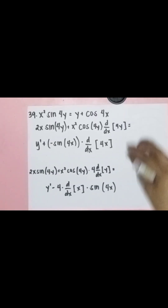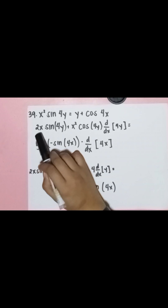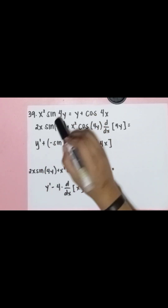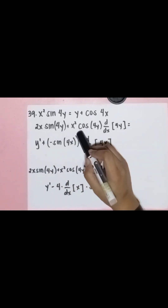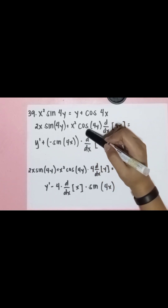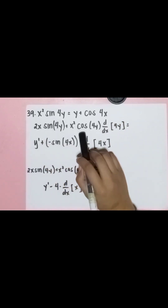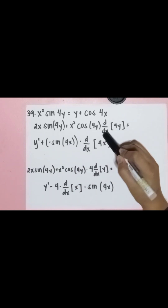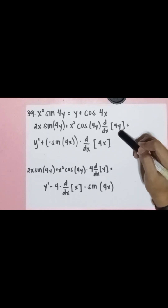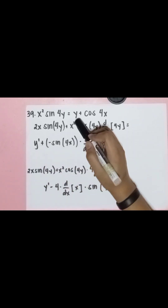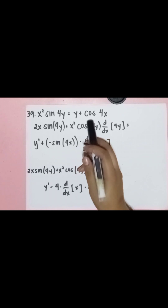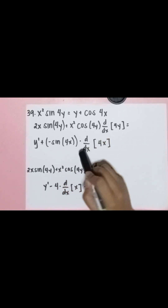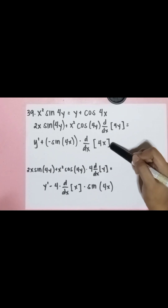Applying the product rule gives us: the derivative of x squared is 2x, copy sine 4y, plus x squared times cosine — the derivative of sine — times 4y, times the derivative of 4y. This equals the derivative of y, which is y prime, plus the derivative of cosine, which is negative sine, times 4x times the derivative of 4x.